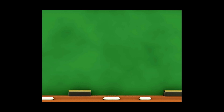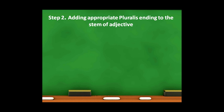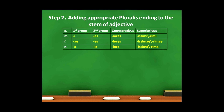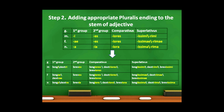After identifying the stem, we can add the appropriate pluralis ending to construct the pluralis form of adjectives. For this, we use the following endings. After adding these pluralis endings to our stems, we will get the following pluralis forms.